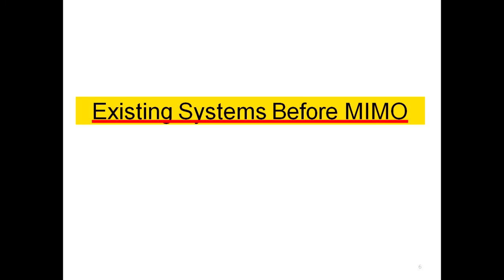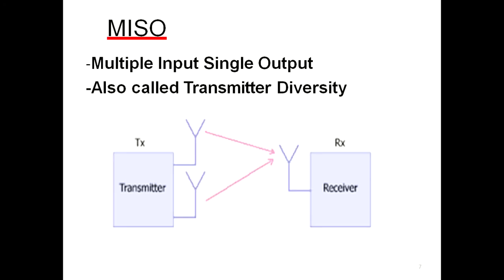Now let's look at the systems that existed before MIMO. We already saw SISO — Single Input Single Output. The second one is MISO — Multiple Input Single Output.